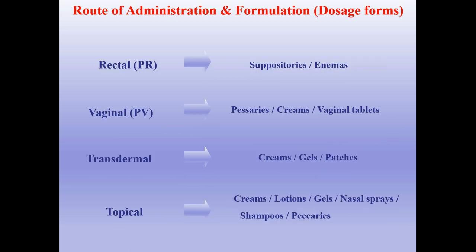Other routes include rectal (suppositories, enemas), vaginal (pessaries, creams, vaginal tablets), transdermal (creams, gels, patches), and topical (creams, lotions, gels, nasal sprays, shampoos, pessaries).